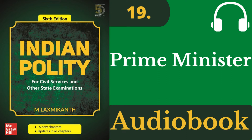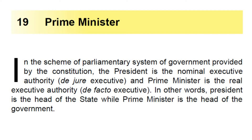Lakshmikanth Indian Polity Chapter 19 - Prime Minister. In the scheme of parliamentary system of government provided by the Constitution, the President is the nominal executive authority, de jure executive, and Prime Minister is the real executive authority, de facto executive. In other words, the President is the head of the state while the Prime Minister is the head of the government.